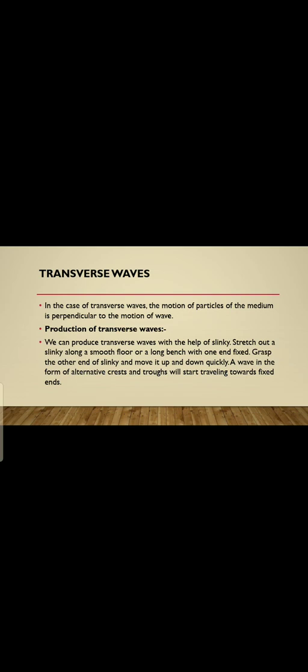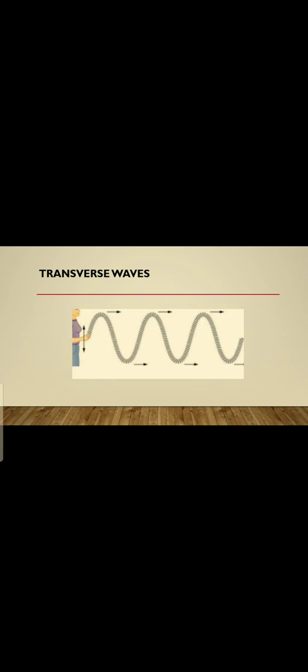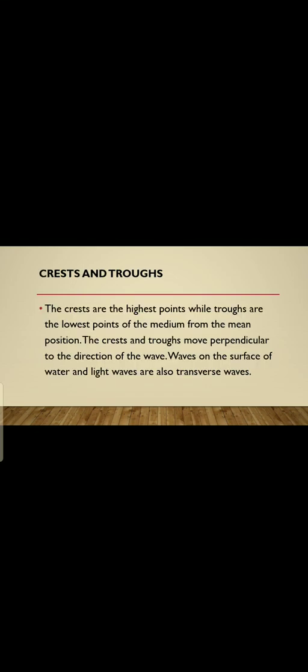We can produce transverse waves with the help of a slinky. Stretch one end of the slinky along a smooth floor or a long bench with the fixed end, grasp the other end, and move it up and down quickly. In this case, we move the slinky up and down quickly. Waves in the form of alternating crests and troughs will start traveling towards the fixed end, as you can see in the figure.